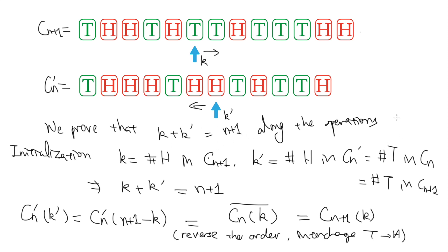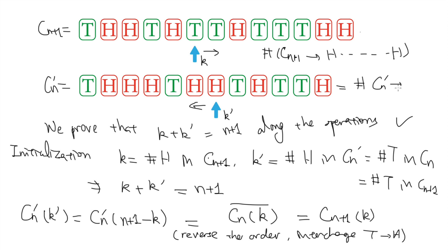In particular, if all the coins in cn+1 are heads, then k must be at position n plus 1. This implies that k' is 0, meaning that all the coins in cn' are tails. So this implies that the number of operations sending cn+1 to all heads is equal to the number of operations sending cn' to all tails.